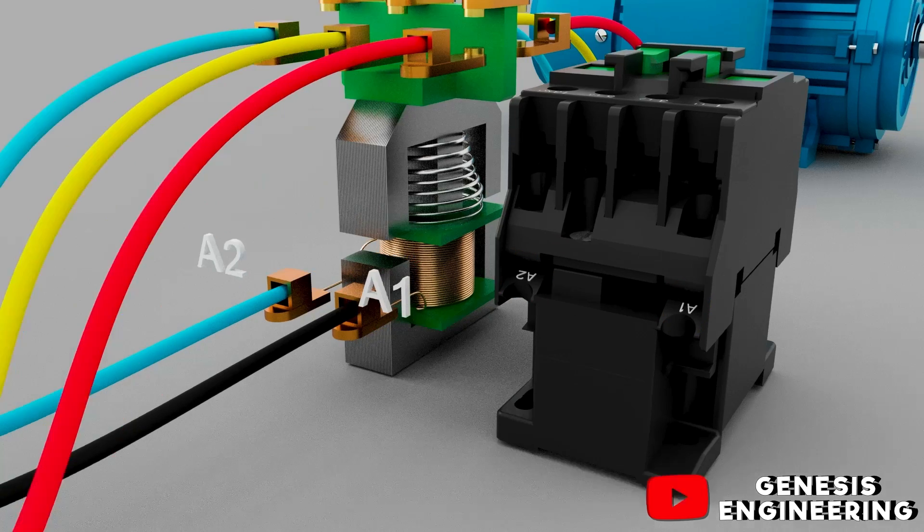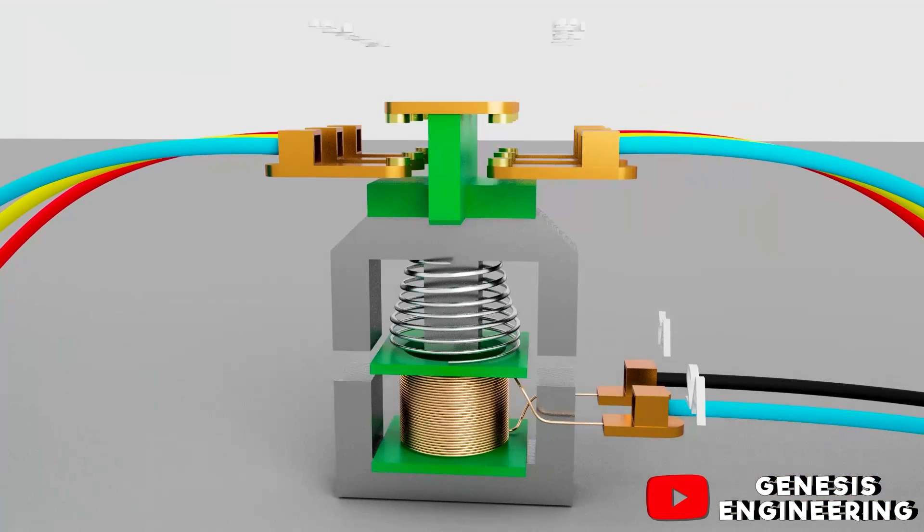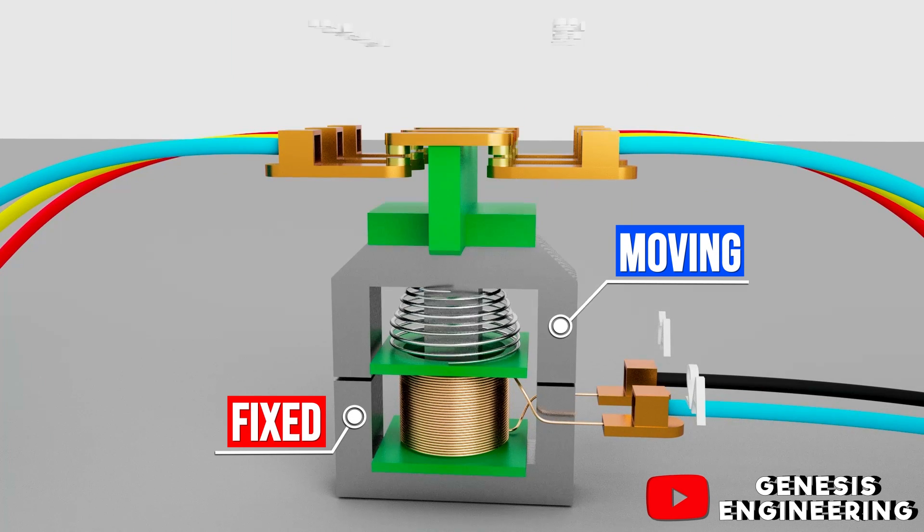Basically the contactor will work as follows. Inside the contactor we have the core which is made of a ferromagnetic material, which is divided into two parts, a mobile core and a fixed core.